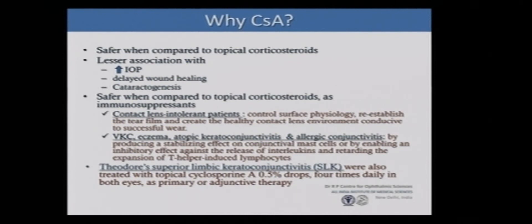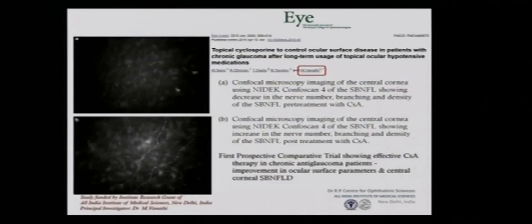Cyclosporine needs a particular period of time — it is not rapid acting and needs at least 12 weeks before its therapeutic effects come into action. You need to keep the therapy on for these patients, and compliance is a major issue when waiting for the immuno-modulating anti-inflammatory effect to come into action. We did an in-vivo confocal microscopic study — a prospective comparative trial — looking at a group of patients before and after cyclosporine therapy in ocular surface disease due to chronic anti-glaucoma therapy, imaging their sub-basal nerve fiber layer.